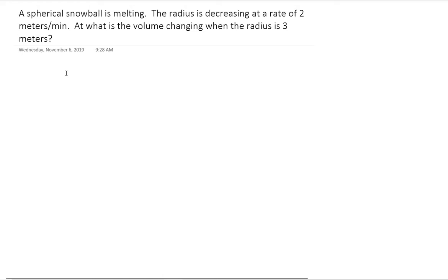Next question: A spherical snowball is melting. The radius is decreasing at a rate of 2 meters per minute. So they're giving us a rate, dr/dt. We have to be careful here because it's decreasing at a rate of 2 meters per minute, so we know it's going to be negative 2. At what rate is the volume changing when the radius is 3 meters? So we need to find dV/dt when r equals 3.